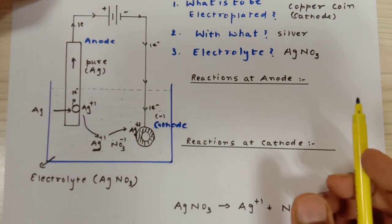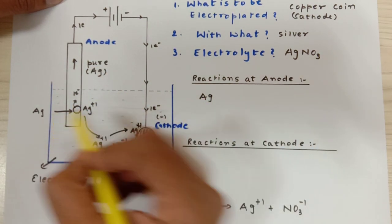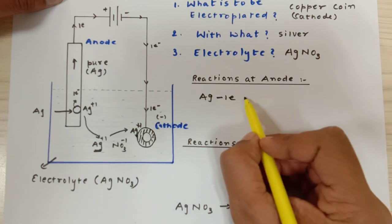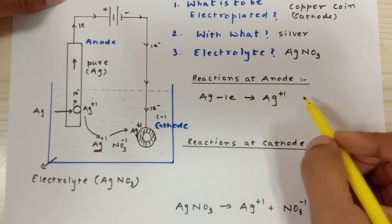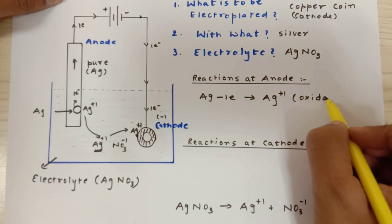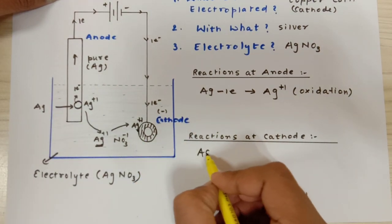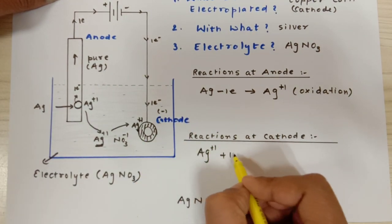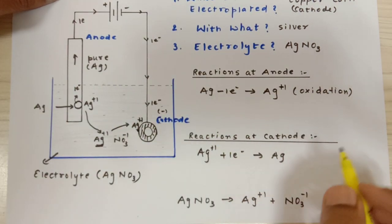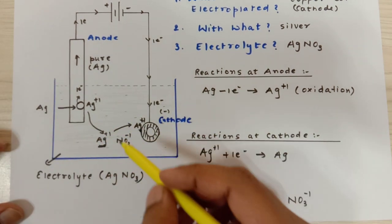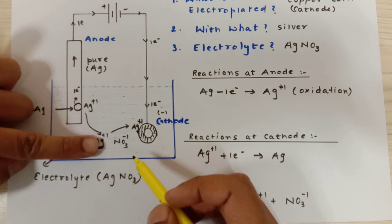Now let us write the reaction. Here at anode, what is happening? Ag silver atom lost one electron to form Ag+1. This is loss of electrons, oxidation. And over here, Ag+1 was waiting and it took one electron from the external circuit and converted into silver atom.